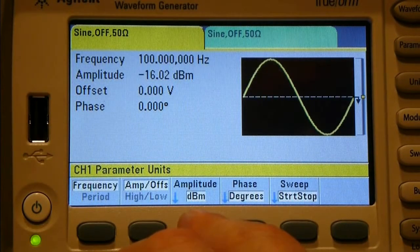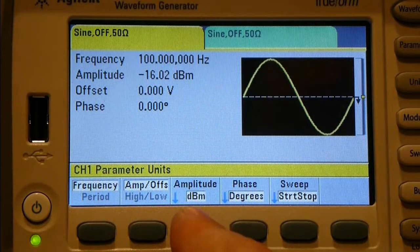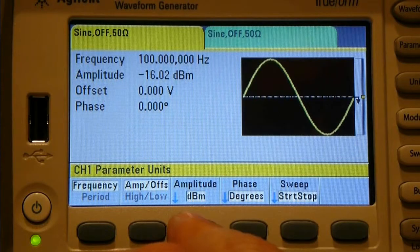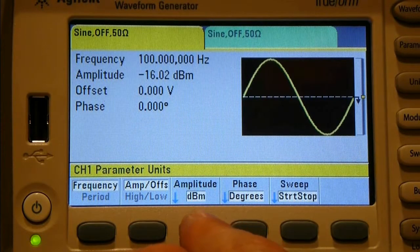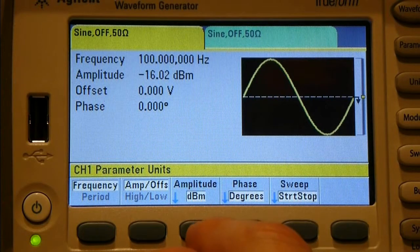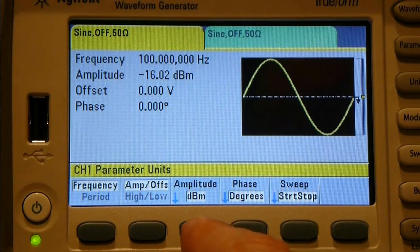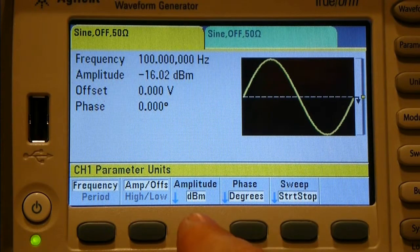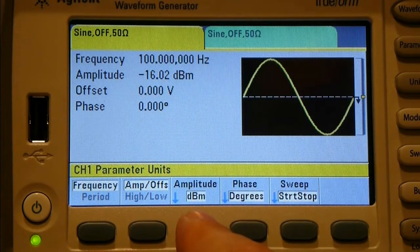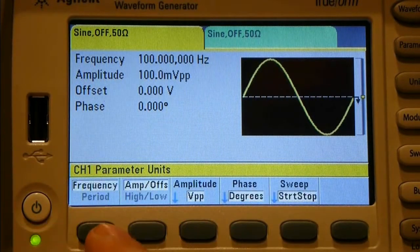Next one is in dBm. So, with 100 mV peak-to-peak, into a 50 ohm load, that works out to be minus 16.02 dBm. If you're doing work on sound or antenna driving and things like that, where you actually want to be working in dBms versus absolute volts and things, then this is the setting that you would be using.